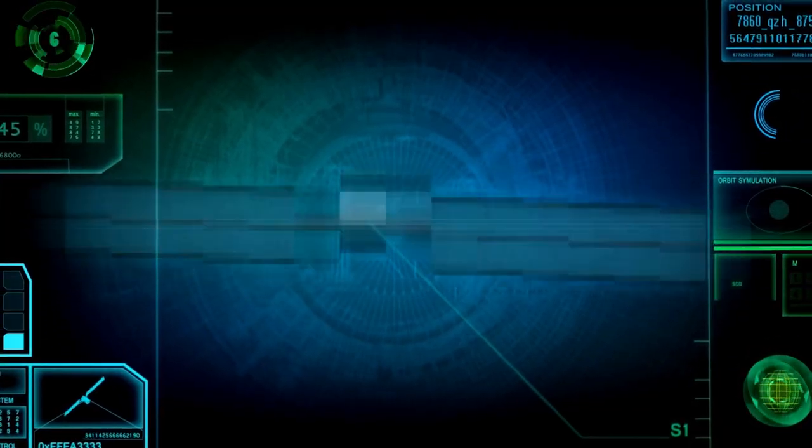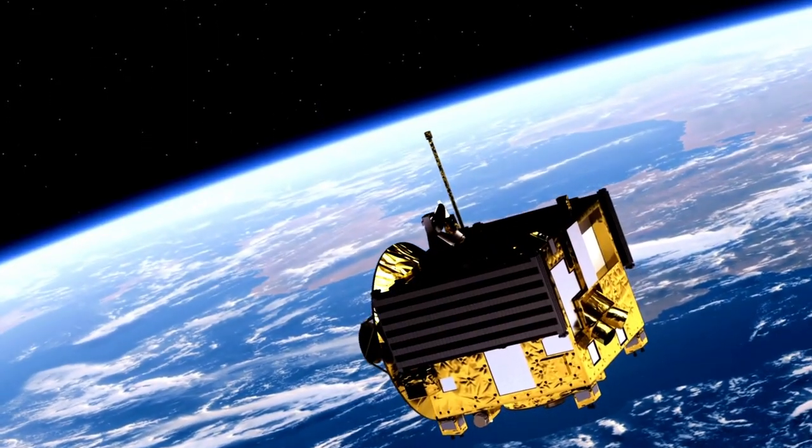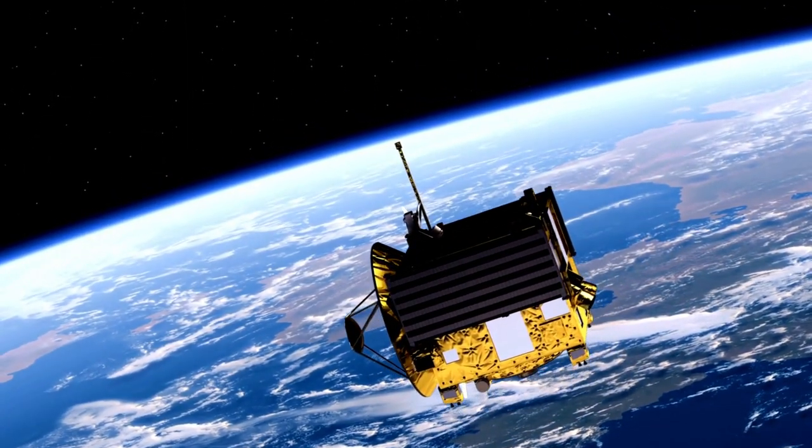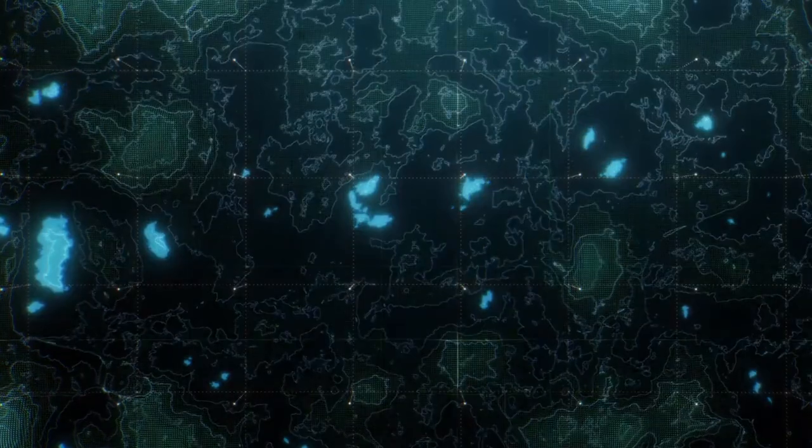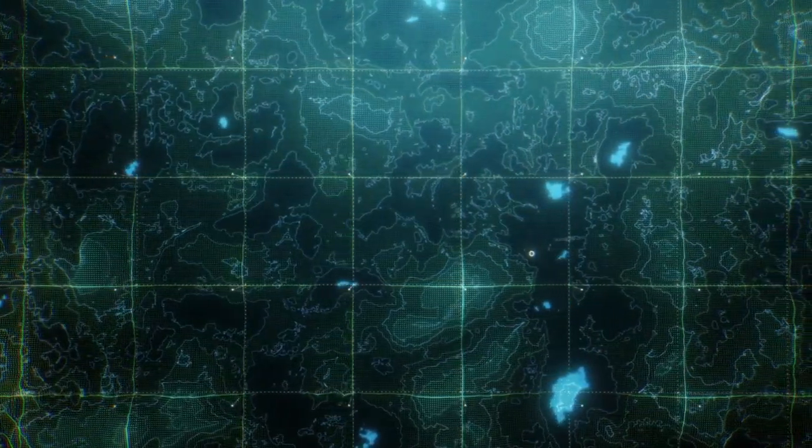Astronauts use advanced instruments, star charts, and GPS-like systems to find their way through the cosmos, ensuring they reach their destinations accurately. The precision required for space navigation is a vital aspect of space exploration.